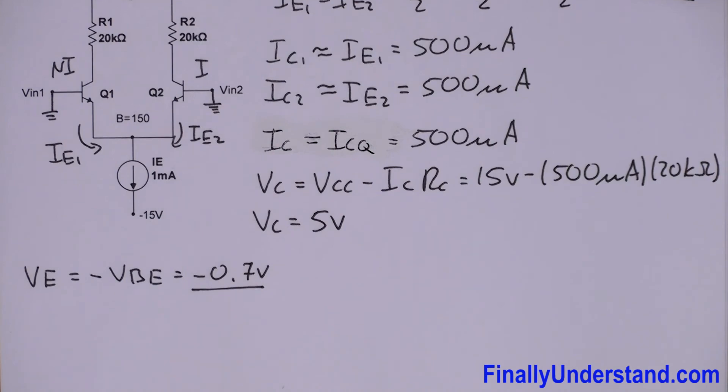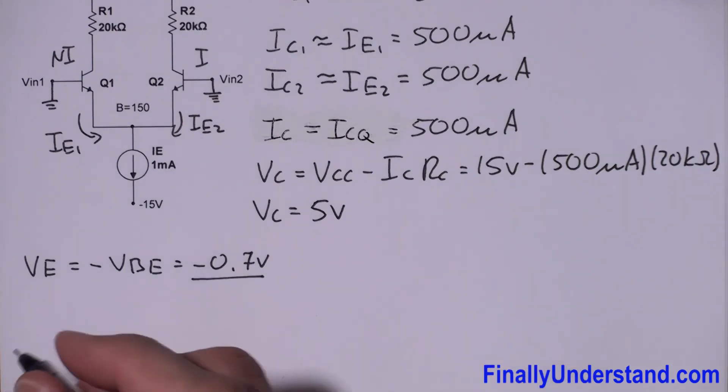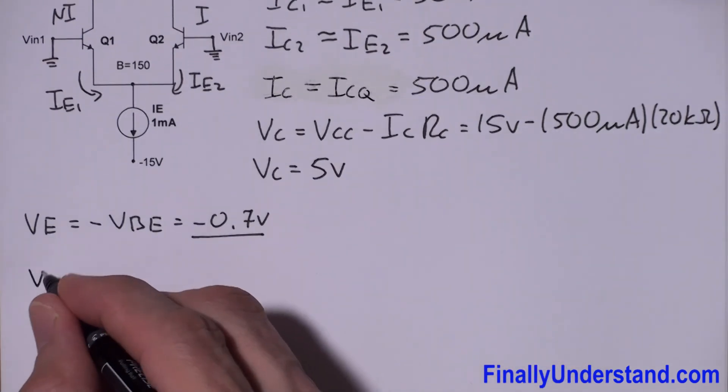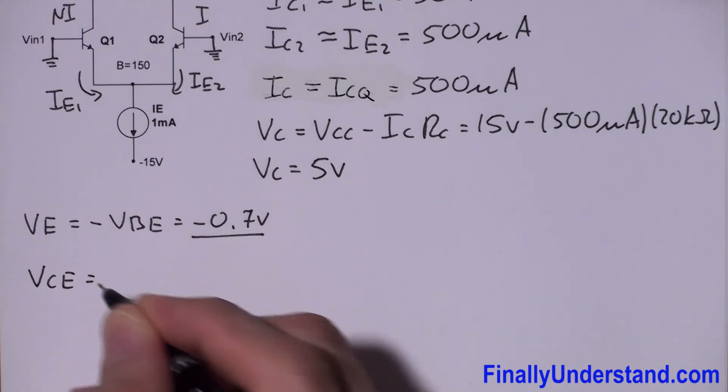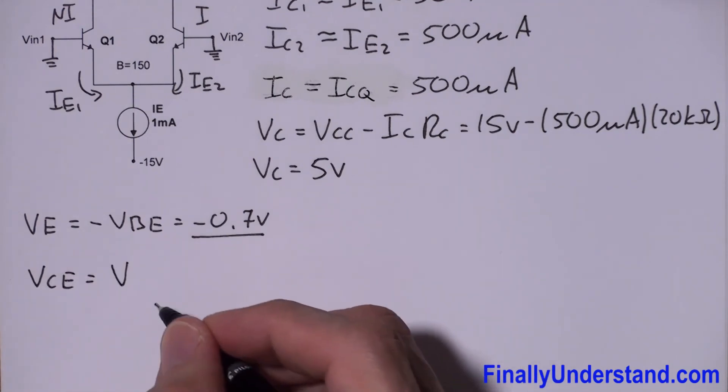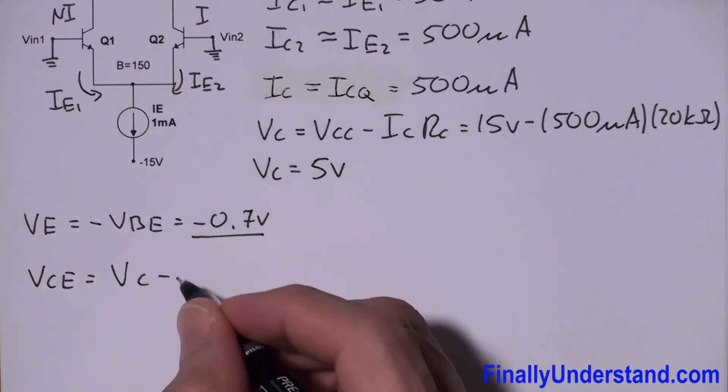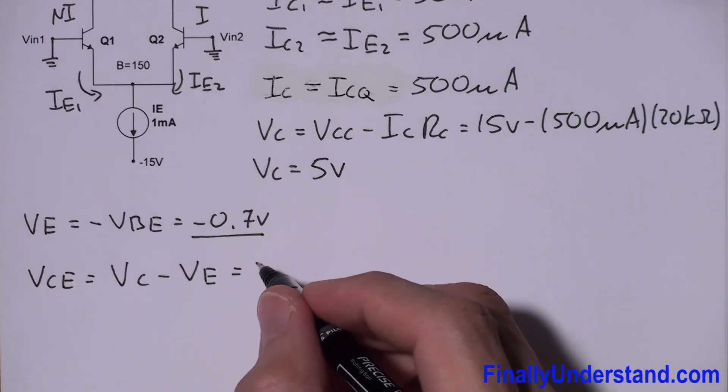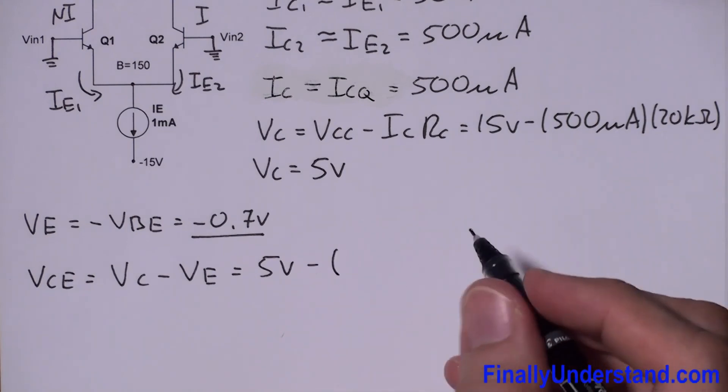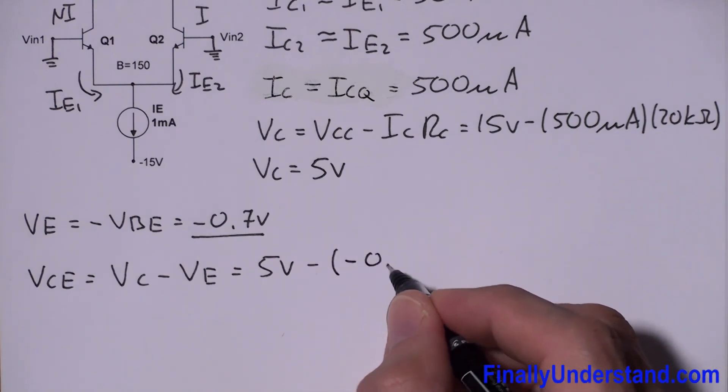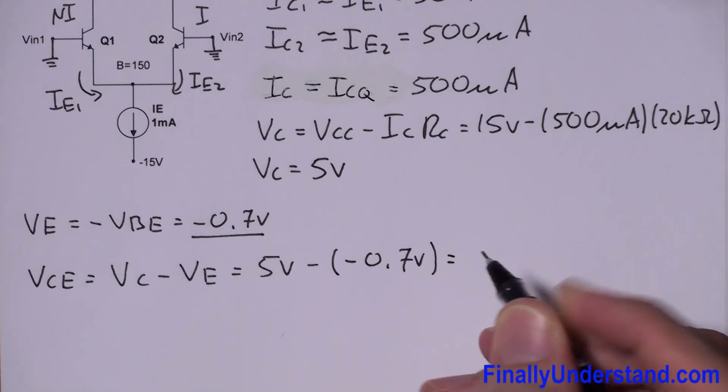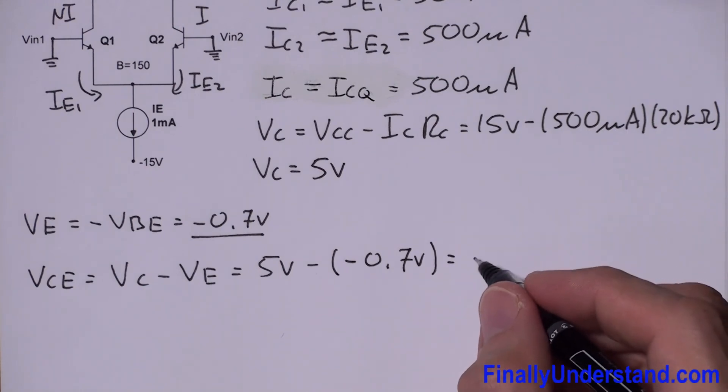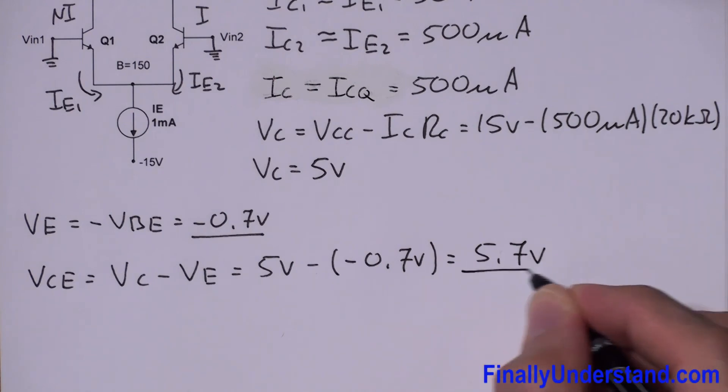So if I have VE and I have VC, I can find VCE. VCE is equal to VC minus VE, where VC is 5 volts minus negative 0.7 volts. This equals 5.7 volts.